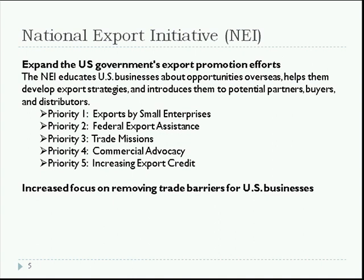The NEI establishes eight priorities for government action. The main goal is to expand the U.S. government's export promotion efforts — educating U.S. businesses about opportunities overseas, helping them develop export strategies, and introducing them to potential partners, buyers, and distributors. The first five priorities focus on export services provided by the U.S. government and resource partners. The number one priority is small business. Four other priorities focus on improving services to exporters, including federal export assistance such as trade shows and trade missions, commercial advocacy, and increasing export credit. The remaining three focus on removing trade barriers, rebalancing the global economy, and increasing the focus on exports of U.S. services.